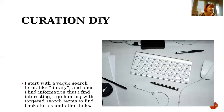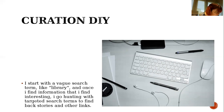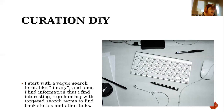When we look for content for Leanta, we don't use aggregator sites like Feedly and Scoop It, though a lot of marketers do. Sites like those are helpful, but we're more hands-on with the content we share, and we think this makes us stand out. I look for interesting stories by doing a Google search every morning under the news. I start with a vague search term like 'library', and once I find information that I think is interesting, I go hunting with targeted search terms to find backstories and other links. Searching for 'books', 'librarian', and other industry terms digs up stories that may not turn up under that initial search of 'library'. I've also set up some of these keyword searches to be emailed to my Gmail account every day, which cuts the time I have to spend looking when I'm in a hurry.